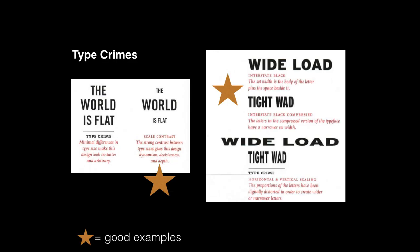Type crime: whenever you stretch or squash your type, that is a type crime. I'll include a video about creating outlines in Illustrator to adjust your text size. You can see on the left that very minimal differences between text sizes are not very dynamic, but scale contrast really adds dynamism. And you can see the type crime of vertical and horizontal scaling of 'wide load' and 'tightwad' that just looks distorted.